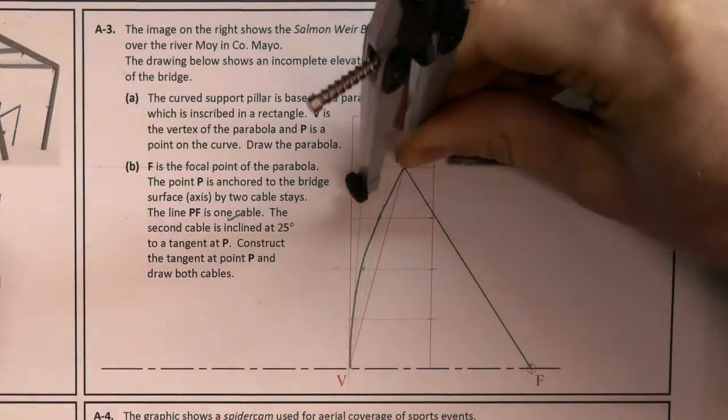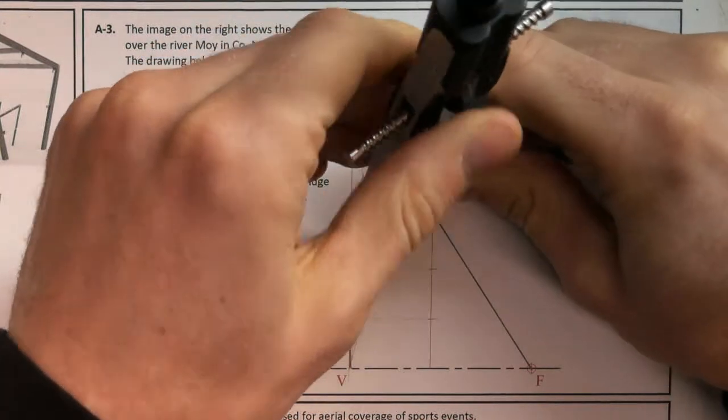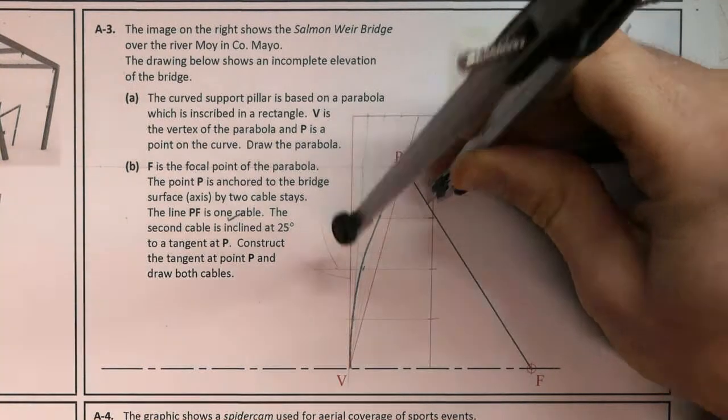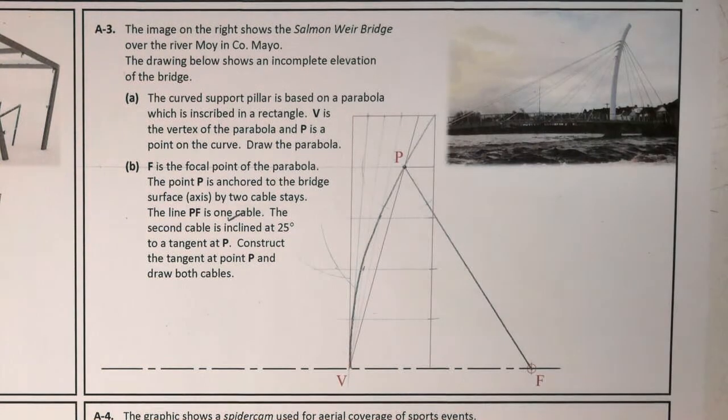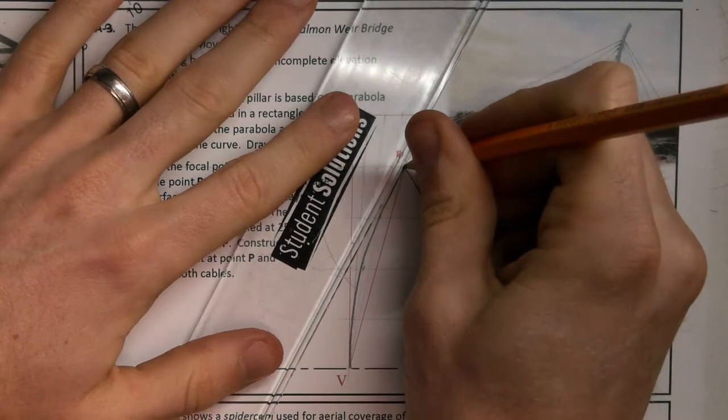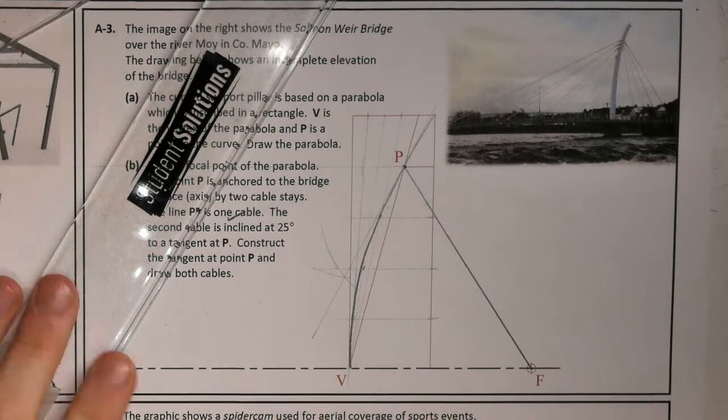I'm going to draw that bisecting line. That will find the tangent to point P. So that's one method.